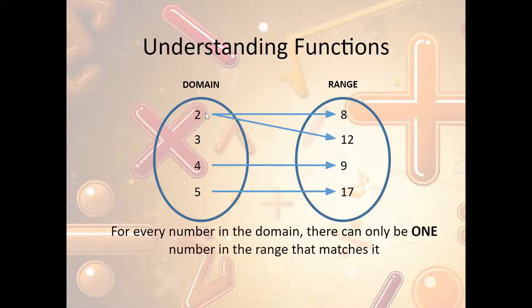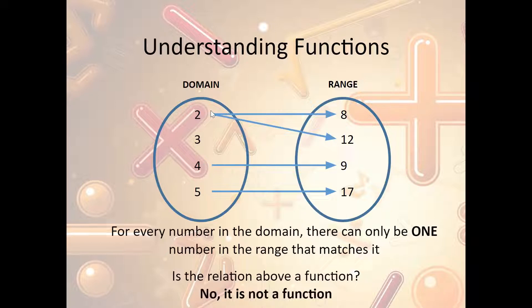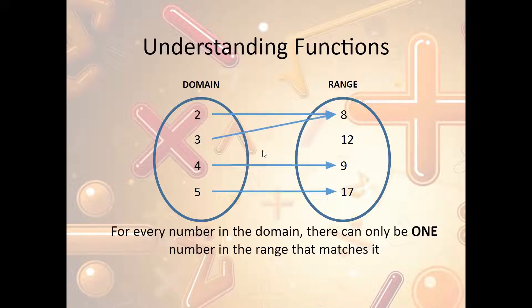In another example, the domain maps 2 to both 8 and 12. This is not a function because 2 is mapped to two different places. Remember, for every x there can be only one y. The issue is with x = 2; values 4 and 5 are okay, and even 3 with no mapping is okay.